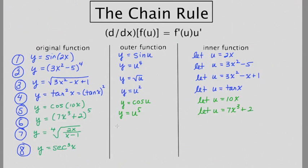And we're almost done here. And number seven, the broader general function is the fourth root of something. Let's define what that something is. u is equal to 2x all over x minus 1.